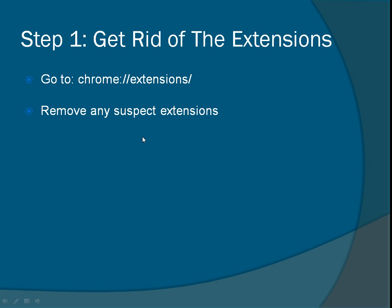You've got to remove any suspect extensions — just delete ones you look at and go, I didn't install that. You also need to disable those that might be suspect. For example, if you'd downloaded one a couple of days ago and then suddenly you're getting all this adware, that one might have something to do with it. But you probably like that extension, so you don't want to delete it. Just disable it, then maybe re-enable it later, and if all the adware comes back, you can blame that and delete it.